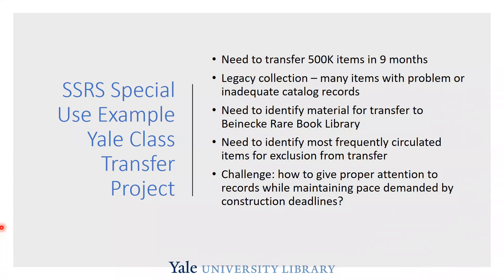We have a special project happening right now at Sterling where we need to transfer 500,000 items out of the Sterling general collection. We usually do about 75,000 items a year — this is a big undertaking in a strict timeline. It's a construction-enabling project and we only have nine months to do it. This is a legacy Yale class collection, so the cataloging records are in all kinds of conditions from good to very bad. We need to identify which records need a higher level of attention than just my team can give. We don't want to be sending things to our offsite storage in poor cataloging condition. Additionally, we wanted to identify materials that are good candidates for sending to our rare book library, and note anything that's a frequently circulated item to exclude from the transfer and keep on campus.